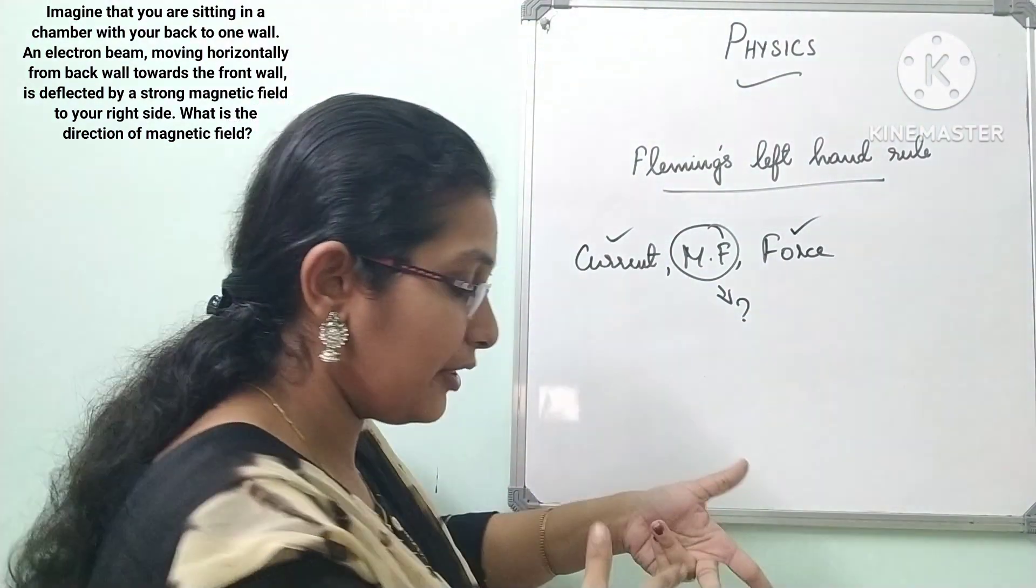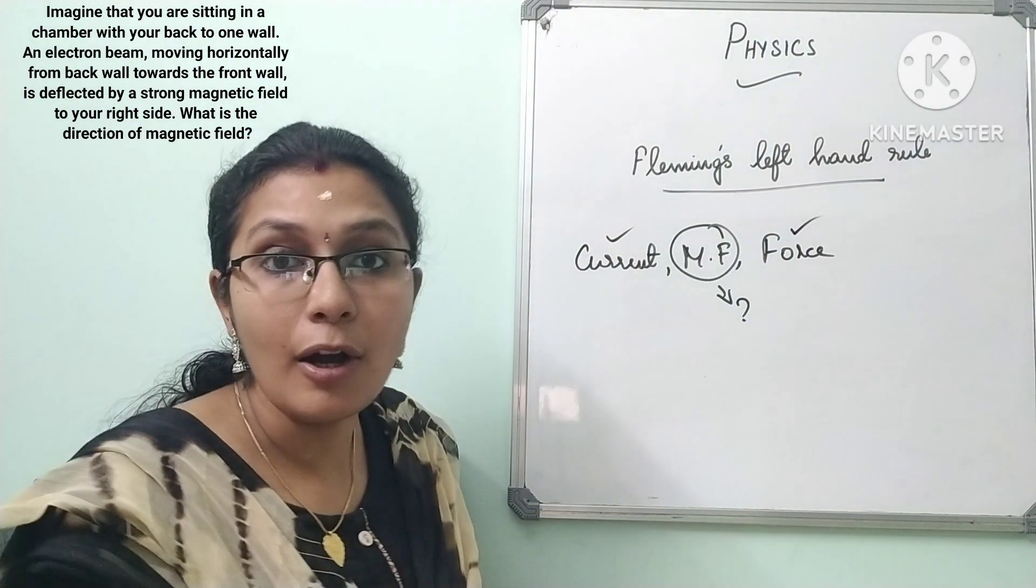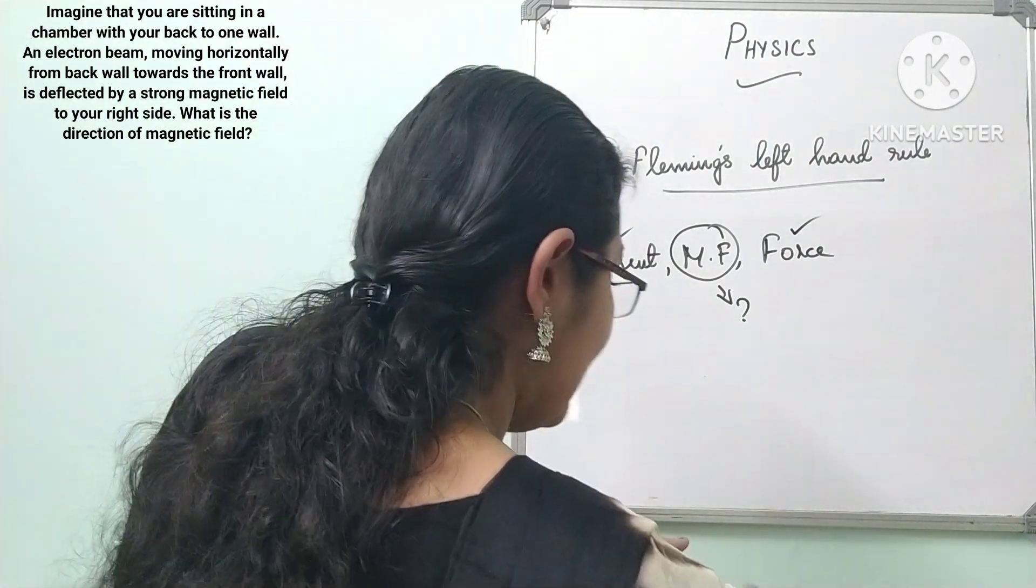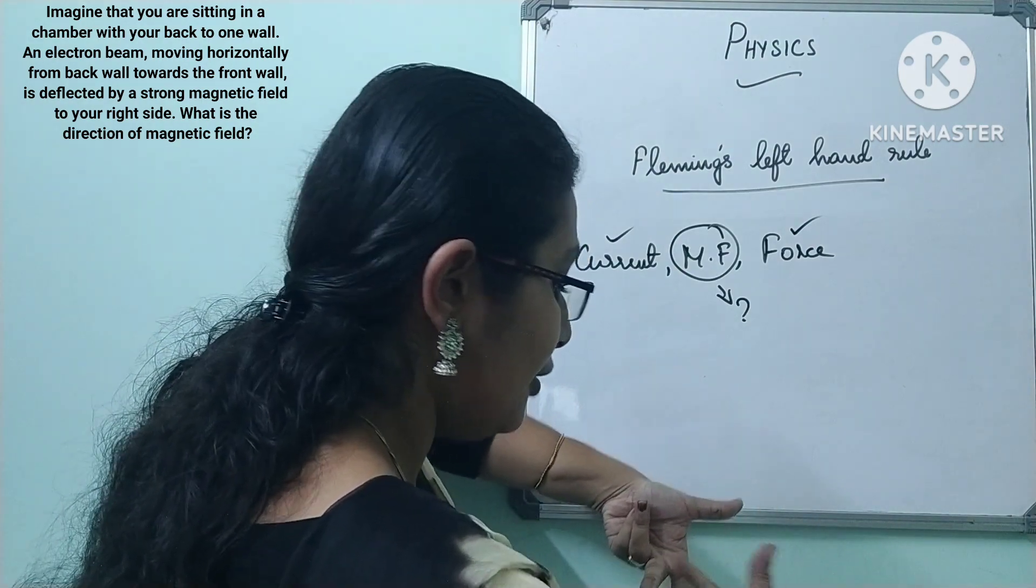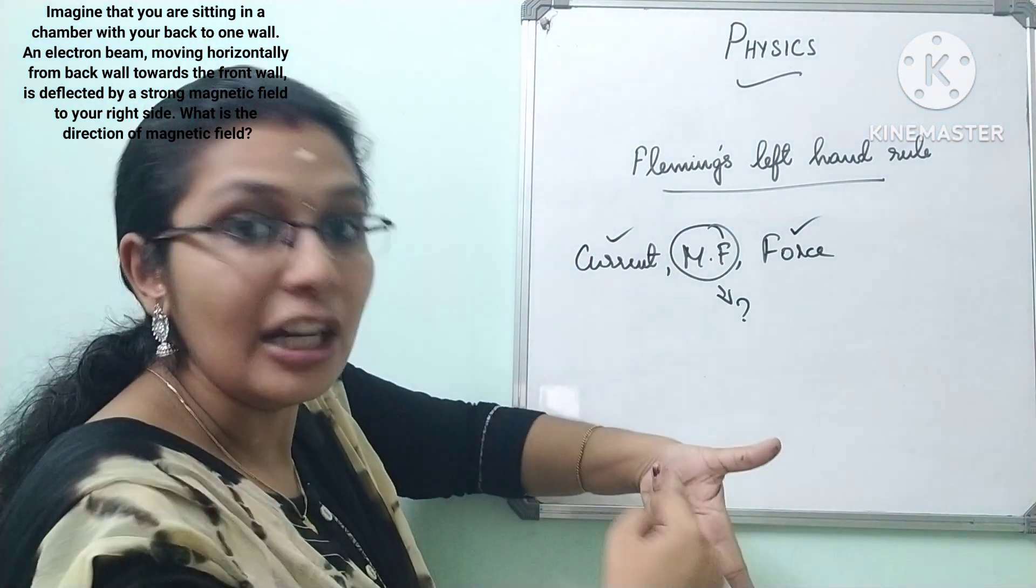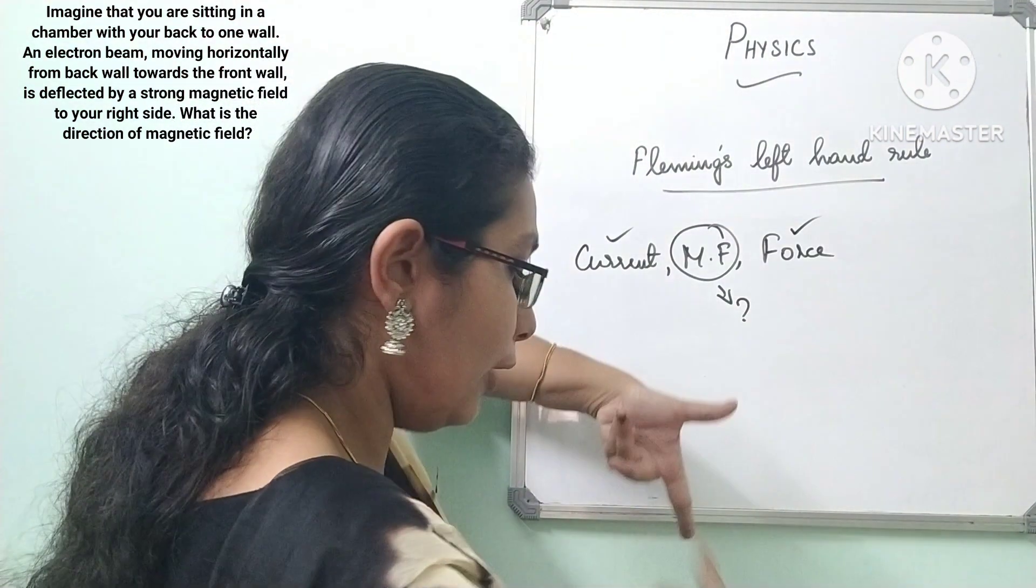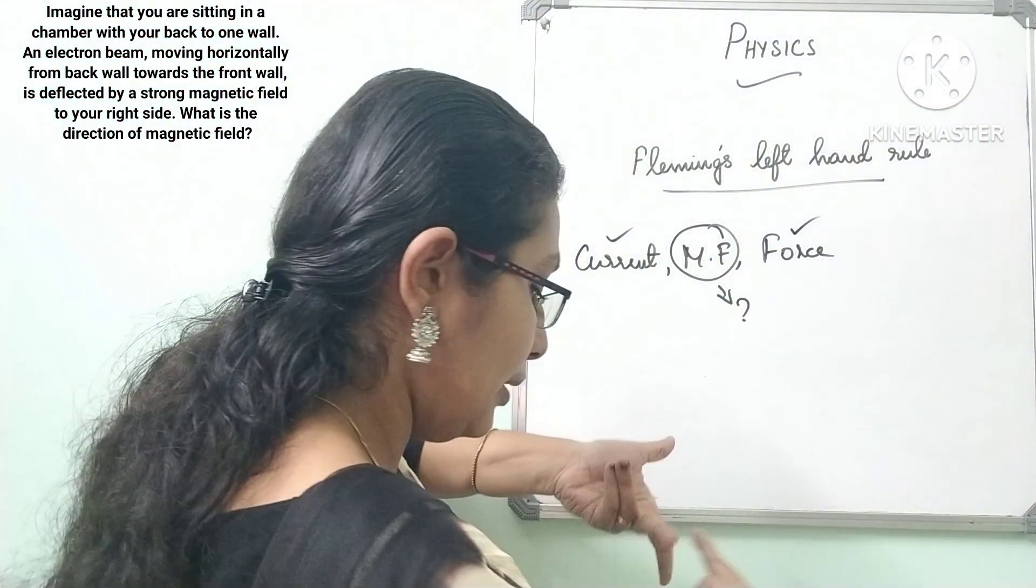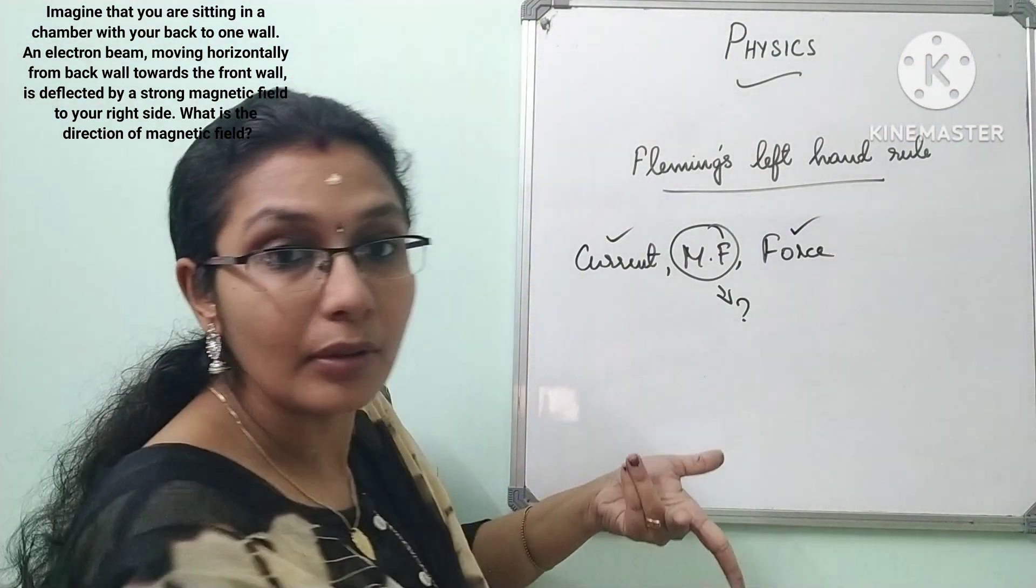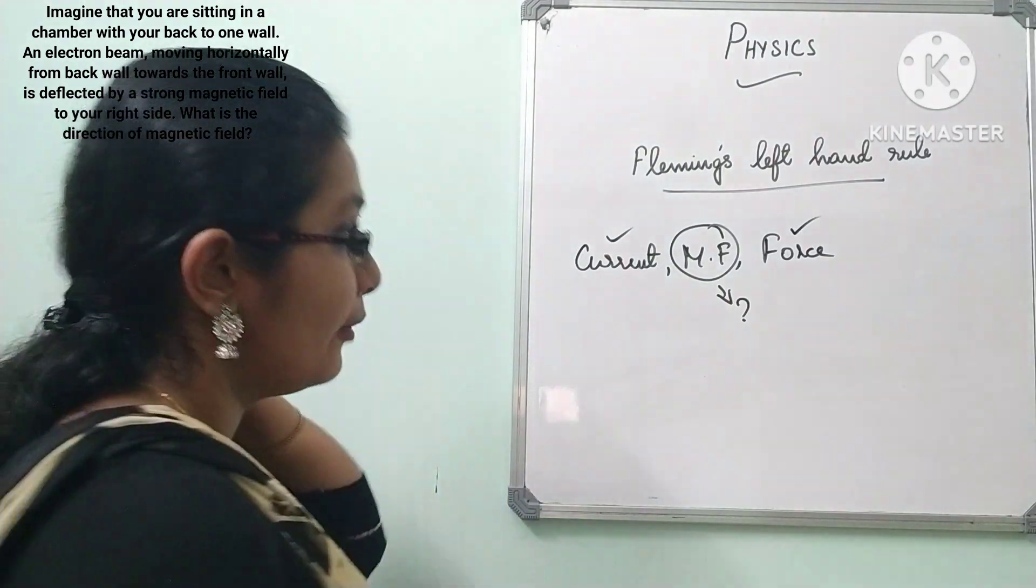So current direction is from front to back, and the direction of force is to my right side. The direction is from front to back, so it is acting downwards. What is the direction of the magnetic field? Downwards. Clear? How am I telling you? It is downwards. Check it.